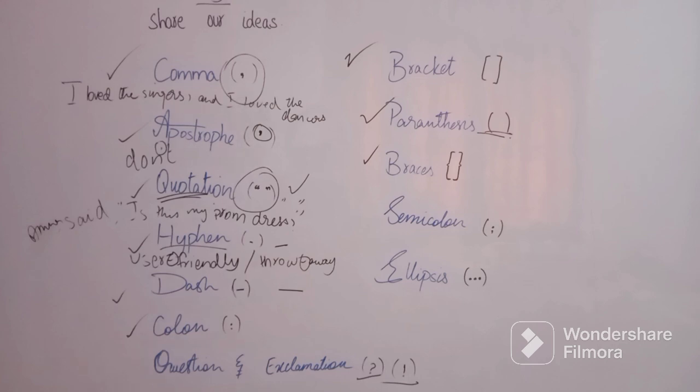Example of parenthesis: Cora (the woman who lives down the street from Jane) works as a paralegal. The information is non-essential—it can be skipped. Example of bracket: Professor Brown claims "she [the novel's central character] is an example of a strong African-American woman."